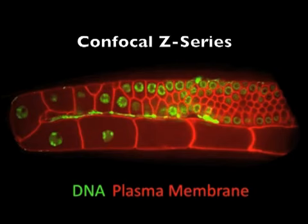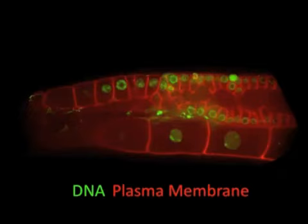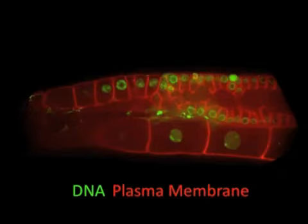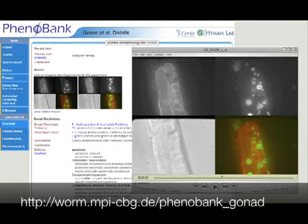For each worm, we collected a confocal Z-series of the gonad. The strains we used expressed fluorescent markers that localized to the plasma membrane and the chromosomes, which allowed us to visualize the cell boundaries and the chromosomes within the tissue. All of the movies and data files are available at Phenobank. We collected gonad images for 554 essential genes, which gave a broad spectrum of phenotypes.